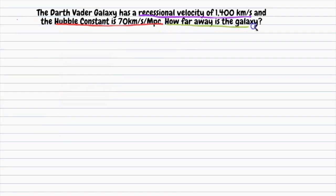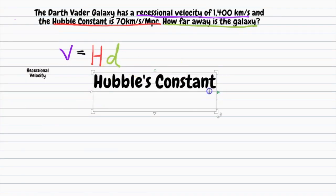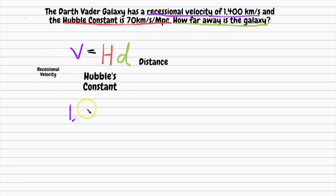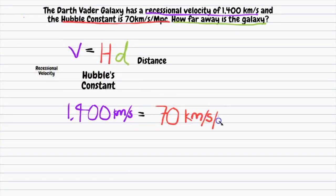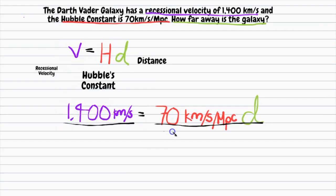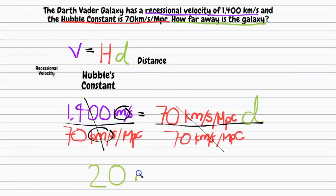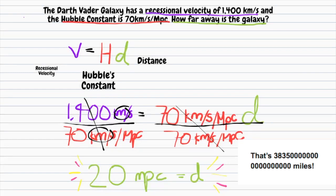How far away is the galaxy? Well, first we're going to set up an equation using Hubble's Law. 1400 is our value for recessional velocity, 70 is our value for Hubble's constant, and distance is our unknown. Isolate the distance by dividing both sides by Hubble's constant and we get d is 20 megaparsecs away.